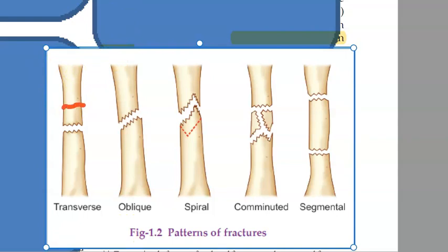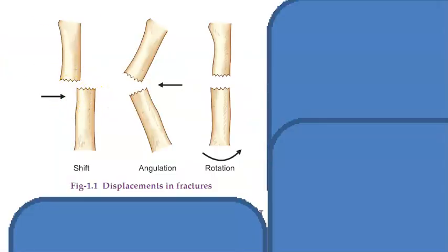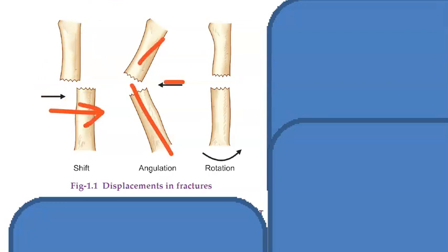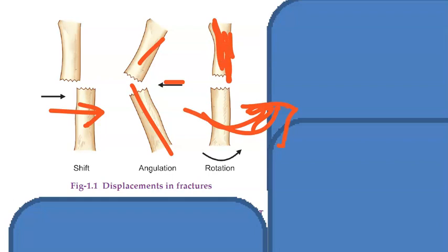Now what is displaced? Look at this — these are displaced. You can see how this one has gone to one side; this one has moved away. Or one has gone this way, and one has gone another way — these are all displaced. One has turned. So all these are displacements: there can be a shift, there can be an angulation, there can be a rotation.